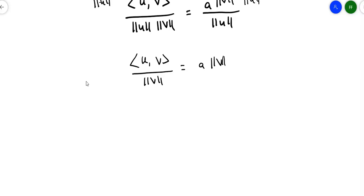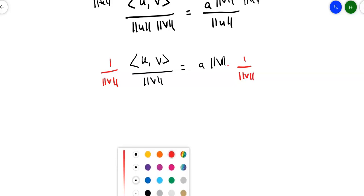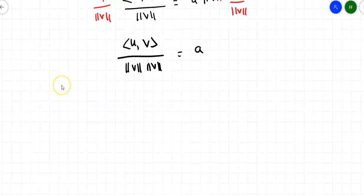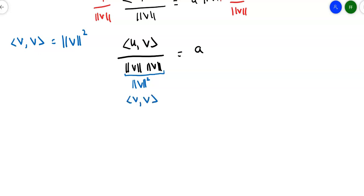Now I'm going to take that magnitude of v from the right-hand side and divide it out — multiply both sides by 1 over the magnitude of vector v. On the left side I end up with the inner product of u and v over the magnitude of v times the magnitude of v. On the right side I just get a. Remember the rule that the inner product of a vector with itself is the same as the magnitude of the vector squared. Down the bottom I have the magnitude of the vector times the magnitude of the vector, so I can replace that with the magnitude of v squared, and then replace that with the inner product of v and v.